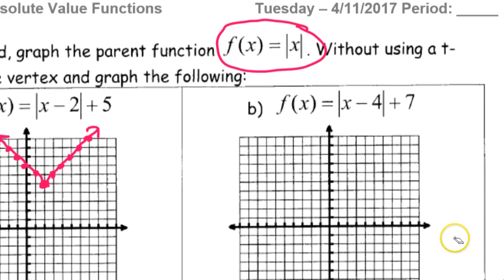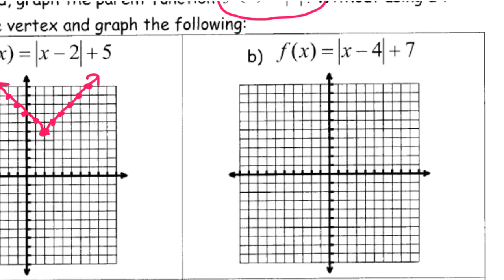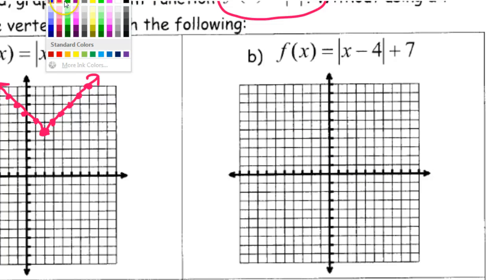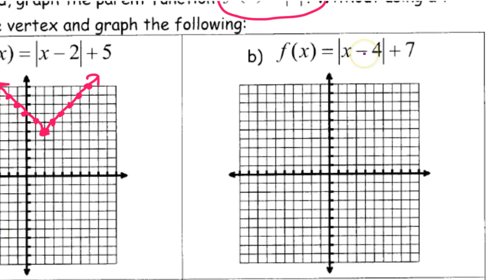Looking at the next function, problem b. This is right 4, up 7. So I go right 4 and up 7 — that's my vertex. If this had been a plus 4 inside, then I would go to the left. There's no number visible in front, so it must be a 1. So I'm going to go up 1 right 1, and then do the mirror image of that for the left side of the V. So this would be the graph of this function.